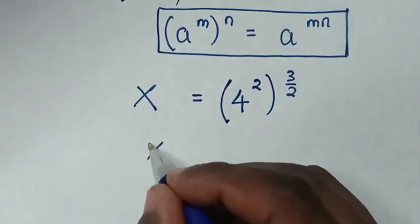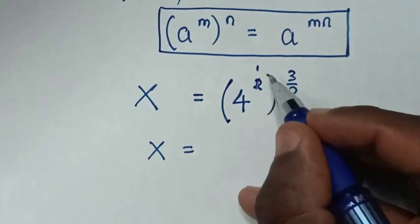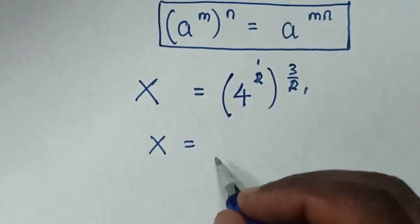Then in the next step it will be x equals, from these powers it can be simplified by 1 and this by 1, so it will be 4 to the power of 3.